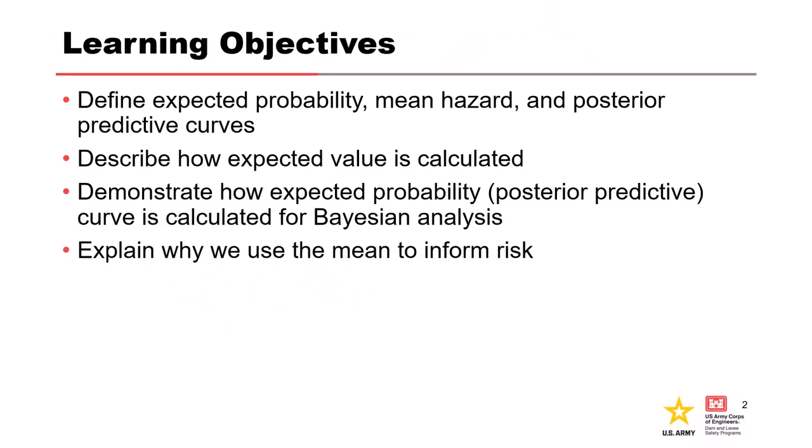We're going to define the expected probability or mean hazard or posterior predictive curve. We'll talk about how it's calculated. We'll demonstrate how it's calculated for Bayesian analysis, which is what we use for dam and levee safety. And we'll also explain why we use the mean to inform risk.